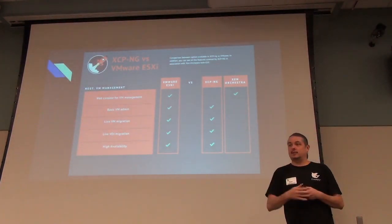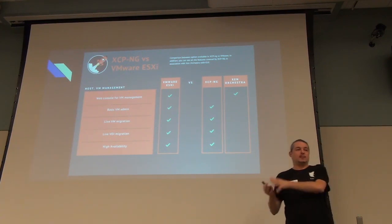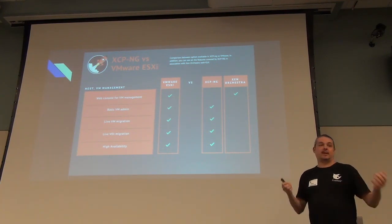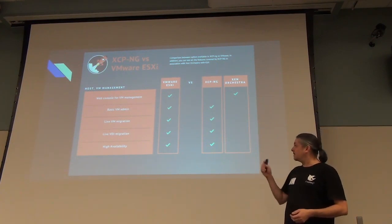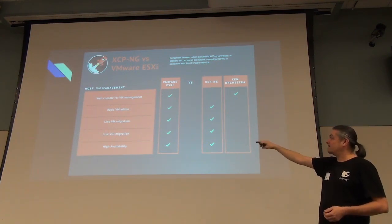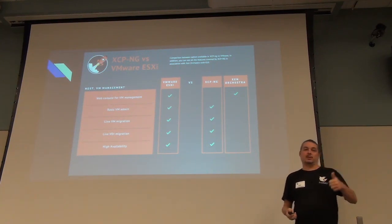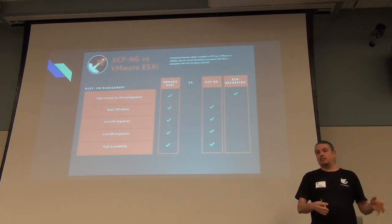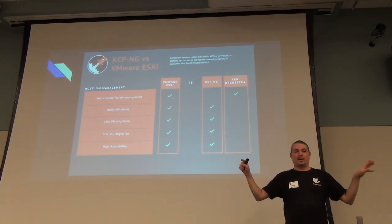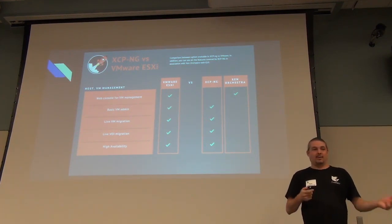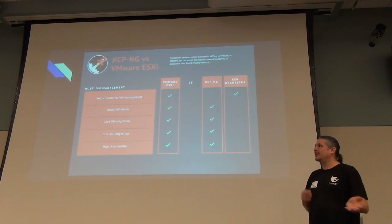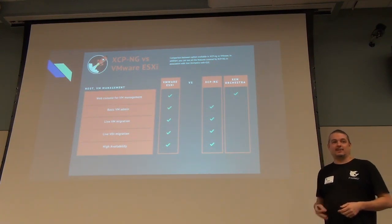Comparing to Citrix XenServer, it's obviously close, but they're also looking at the bigger market — going after VMware ESXi, the default standard for many enterprise environments. Combined with Xen Orchestra you get a web console for management, VM admin, live migration, live VDI migration, and high availability with clustering. It supports completely moving live VMs between clusters and pools, even across versions, and can migrate between Citrix XenServer and XCP-NG. There are no live migrations from ESXi, though.